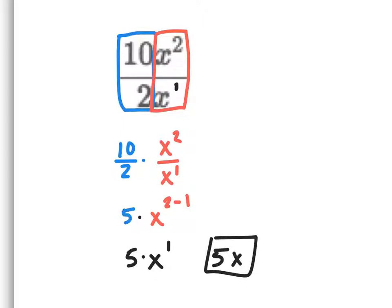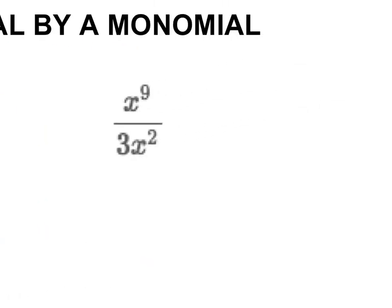So we're just dividing our numbers and simplifying our variables' exponents. Now on this next one, I'm going to rewrite it and put a 1 up here because we don't have a number out front. This is really the same thing as writing 1 third times x to the ninth divided by x squared.